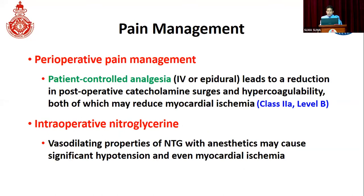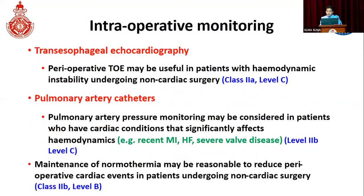Intraoperative nitroglycerin may be helpful but can cause vasodilatation together with other anesthetic agents and may cause significant hypotension and even myocardial ischemia. Intraoperative monitoring is important to reduce cardiovascular events. In major high-risk surgeries, perioperative transesophageal echocardiography is done and is useful for patients with hemodynamic instability. Pulmonary artery catheters may be placed for monitoring pulmonary artery pressure and may be considered in patients with cardiac conditions that significantly affect hemodynamics, such as recent myocardial infarction, decompensated heart failure, and severe valvular disease.